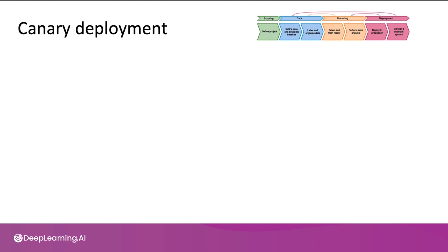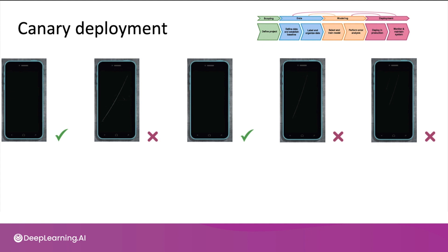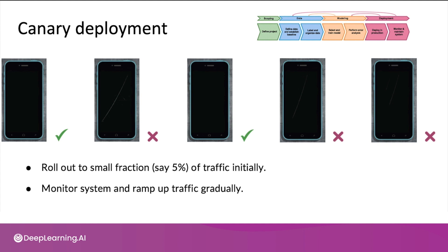When you are ready to let a learning algorithm start making real decisions, a common deployment pattern is canary deployment. In a canary deployment, you roll out to a small fraction — maybe 5% or even less — of traffic initially and start letting the algorithm make real decisions. By running this on only a small percentage of traffic, if the algorithm makes any mistakes, it will affect only a small fraction. This gives you more opportunity to monitor the system and ramp up the percentage of traffic gradually, only when you have greater confidence in its performance.